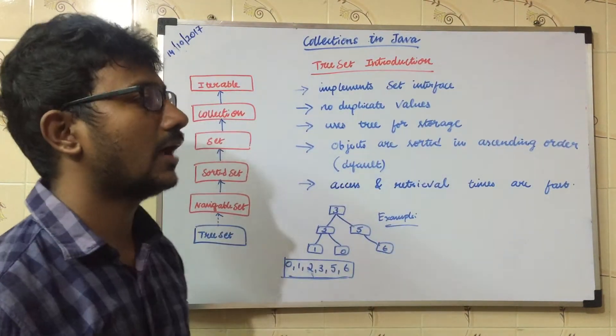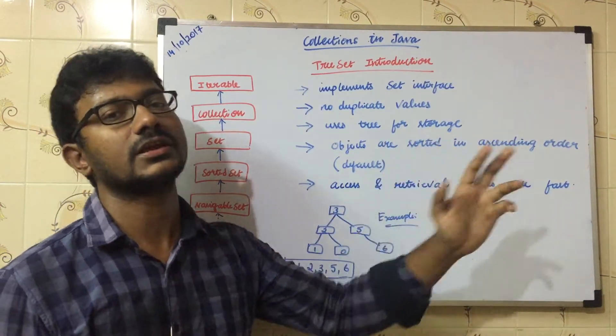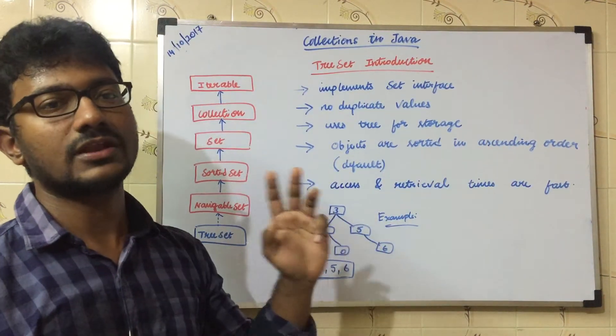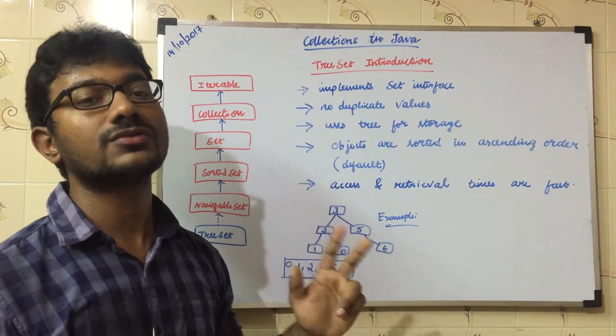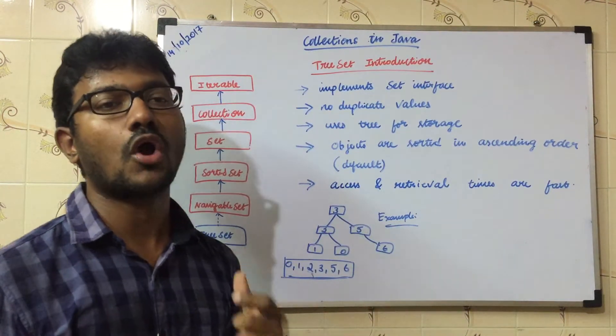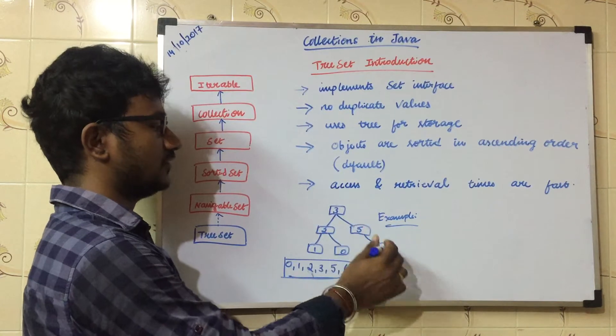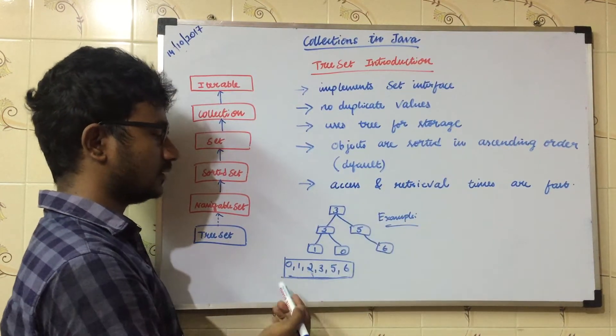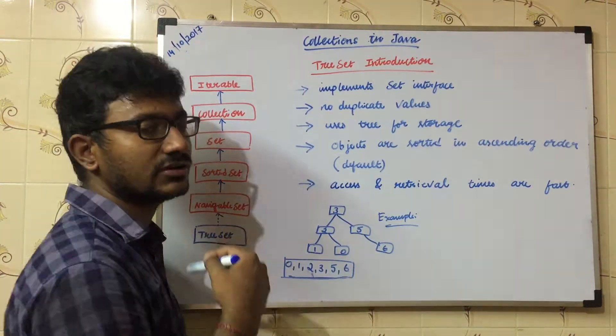The default accessing order for these trees is ascending order. In case of HashSet, there is no order, it's random. In case of LinkedHashSet, insertion order is maintained. Whereas in this, the sorted order, object sorted order. Here 3, 2, 1, 0, 5, 6. If you are trying to access the elements, they will be printed as 0, 1, 2, 3, 5, 6 in ascending order.